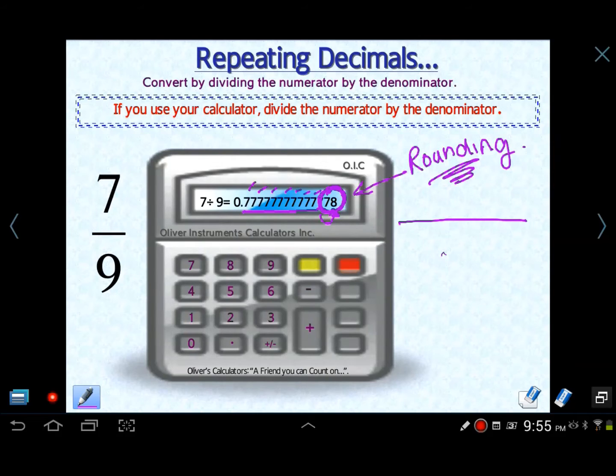So if you have something like this, .5555, forever, not forever, but it should be forever, but your calculator cannot show that. And then all of a sudden there's a 6, like it just came out of nowhere. That's not terminating. It just means it rounded the last number on the screen.